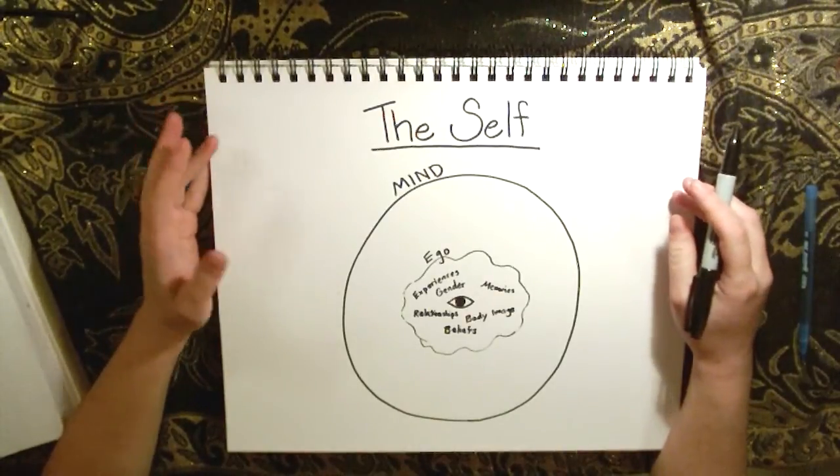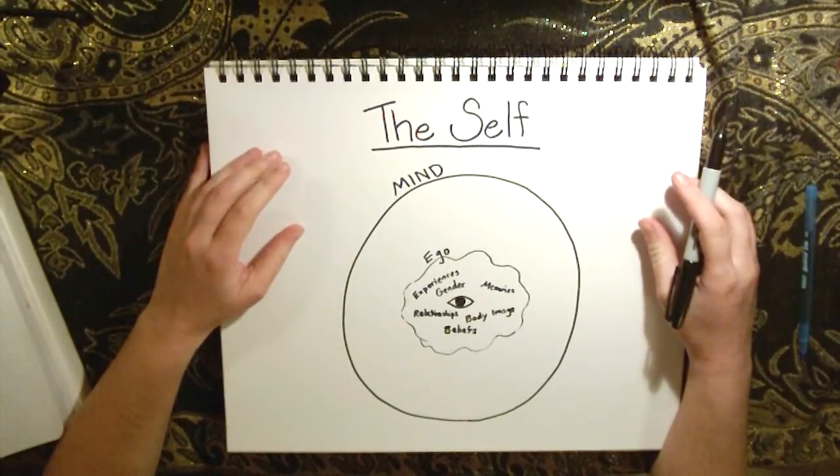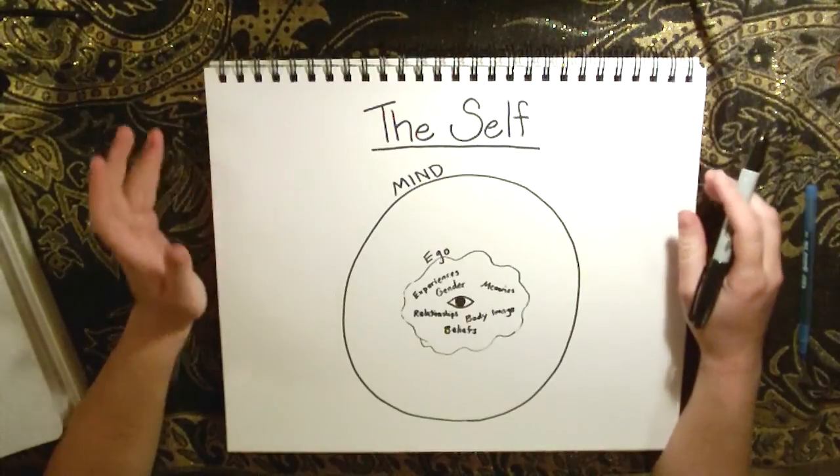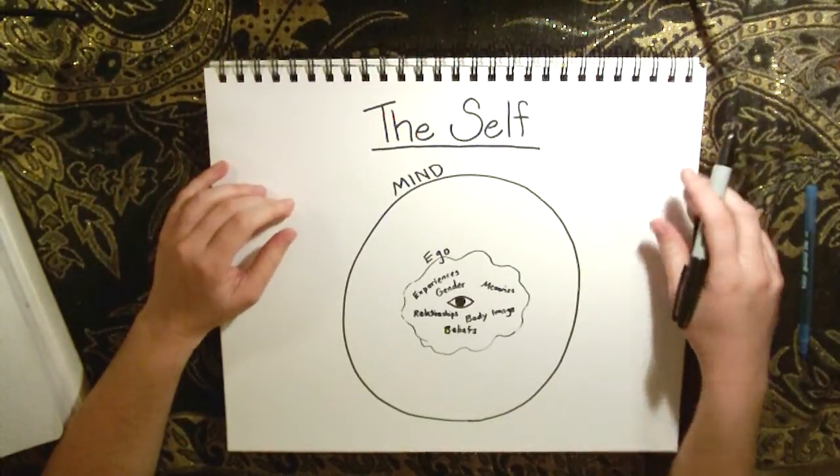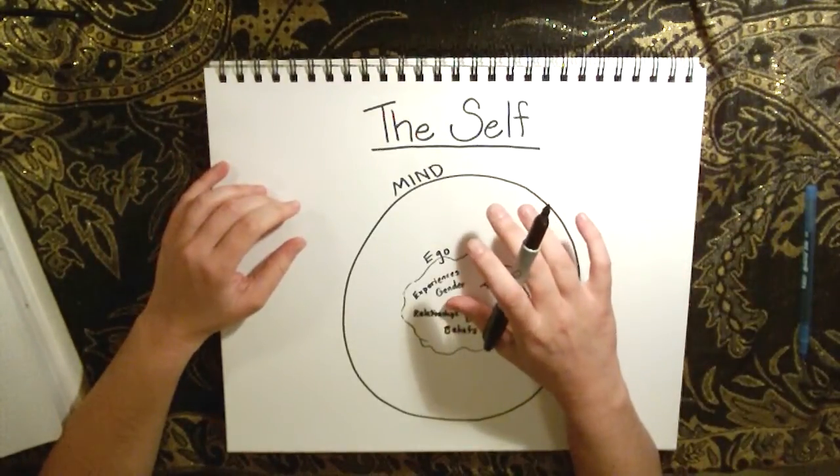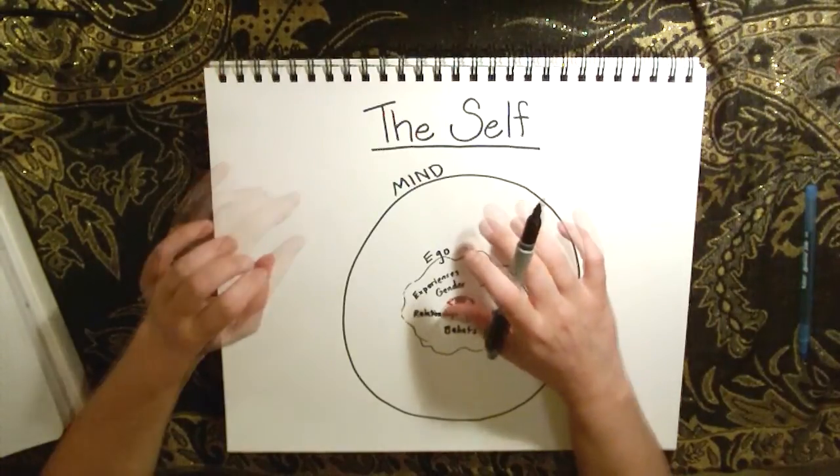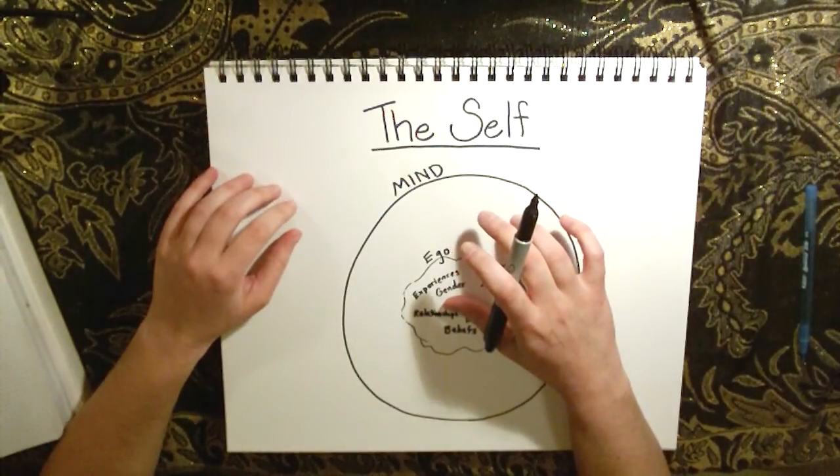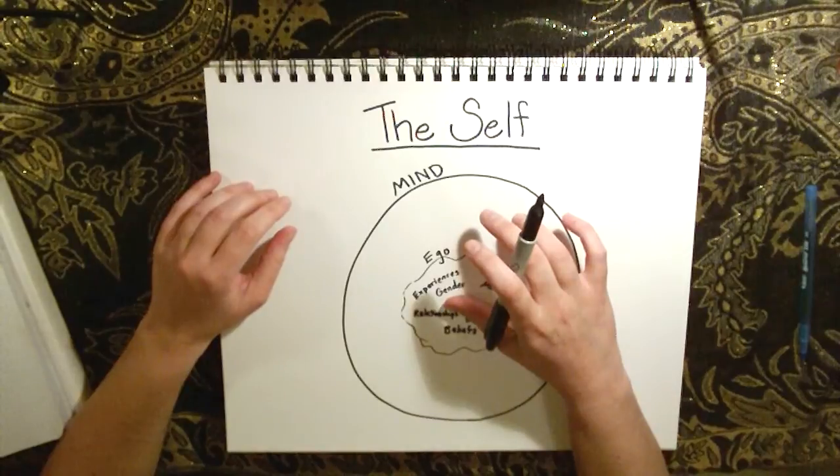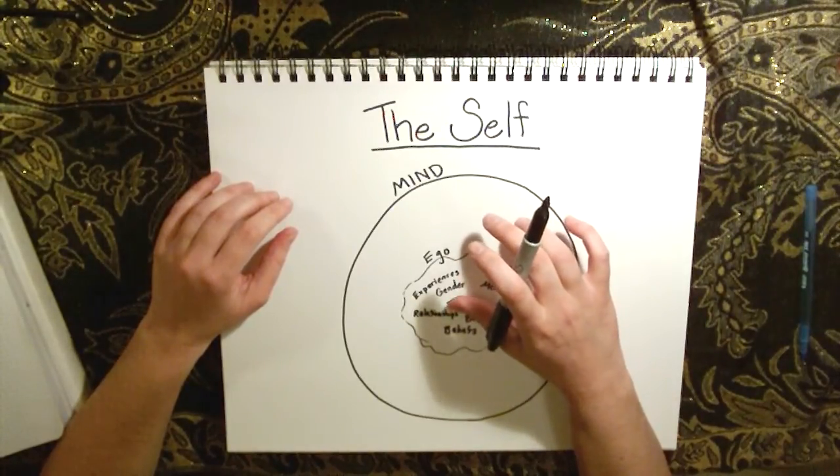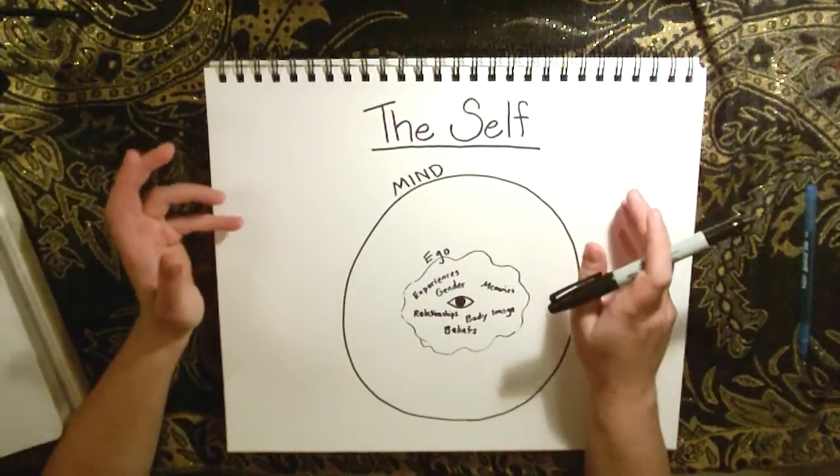Now we need an identity of some kind because try as hard as we might, we're never going to be able to see our own awareness, just like we're never going to see our own eyes. So we have to have an ego of some kind.